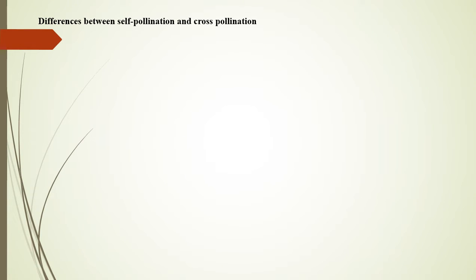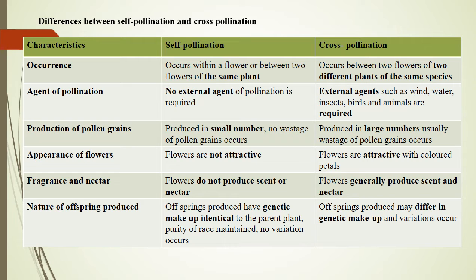Let's see the differences between self-pollination and cross-pollination. Occurrence: In self-pollination, it occurs within a flower or between two flowers of the same plant; in cross-pollination, it occurs between flowers of two different plants. Agent of pollination: In self-pollination, no external agent is required; in cross-pollination, external agents such as wind, water, insects, birds, and animals are required. Production of pollen grains: In self-pollination, it is produced in small numbers with no wastage; in cross-pollination, it is produced in large numbers and wastage usually occurs.